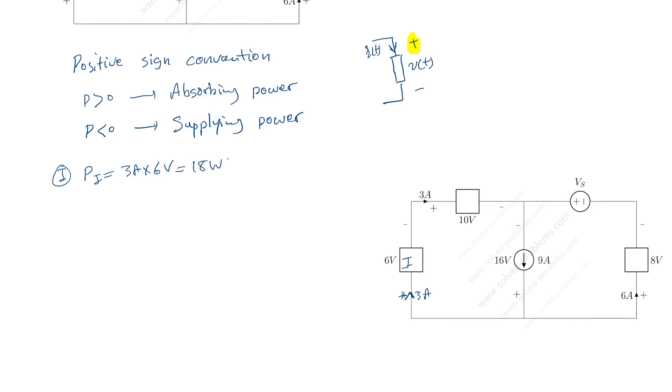But what is the convention that we have? You can see that the current is entering actually from the positive sign of the voltage defined. So P of element one equals three amp multiplied by six volts with positive sign convention. So here we have 18 watt, which is greater than zero. So this element is absorbing power.